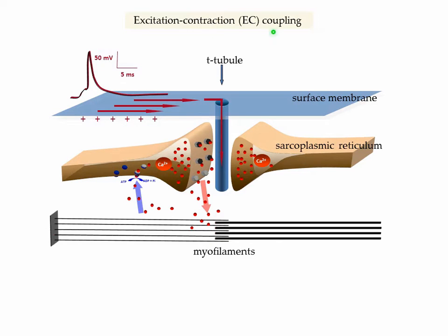This is a story about excitation-contraction coupling in skeletal muscle. This is the process through which electrical activity generated by the nerve command in the membrane of the muscle fibers triggers contraction. It all starts with action potentials generated at the end plates propagating throughout the surface membrane and within the transverse invagination of this membrane, which we call the transverse tubules, the T-tubules.